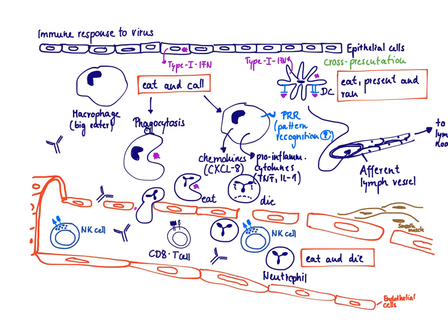Type 1 interferon is a very important cytokine produced during a viral response. It is actually the only cytokine that is really different in the response to a virus compared to a bacteria — the only cytokine found in addition in a viral response compared to a bacterial response.